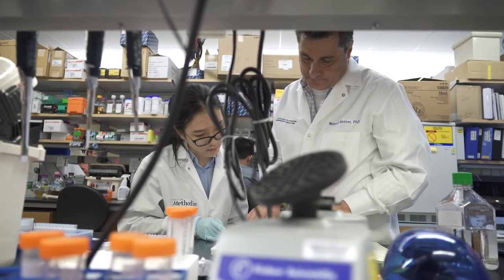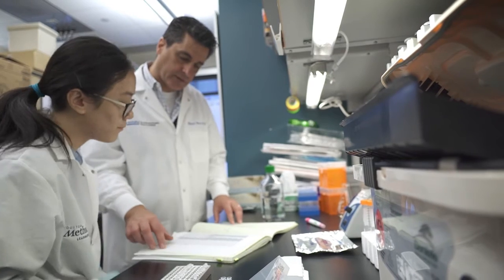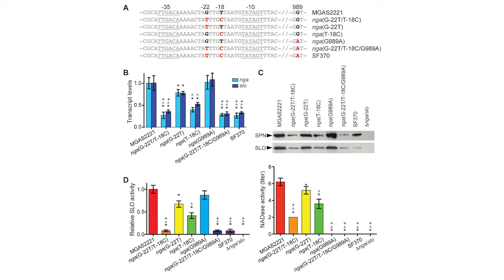Every gene has what's called a regulatory region — it is involved in how genes are transcribed and how proteins are made. The changes that have occurred with Group A strep involve changes in the regulatory region, and that results in increased production of streptolysin O and NADase. So it's really not so much mutations within the gene itself, but they're actually in the regulatory part of the gene.